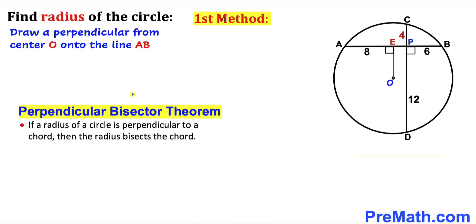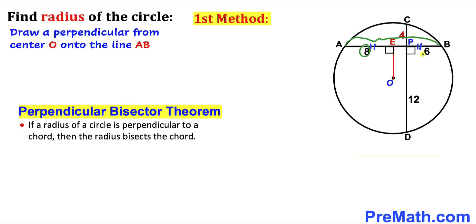Let's recall the perpendicular bisector theorem: if a radius of a circle is perpendicular to a chord, then the radius bisects the chord into two equal parts. In our case, OE bisects chord AB into two equal parts, AE and EB. The total AB length is 8 plus 6, which gives us 14. Half of that is 7 units. So line segment AE is 7 and EB is 7 units as well.